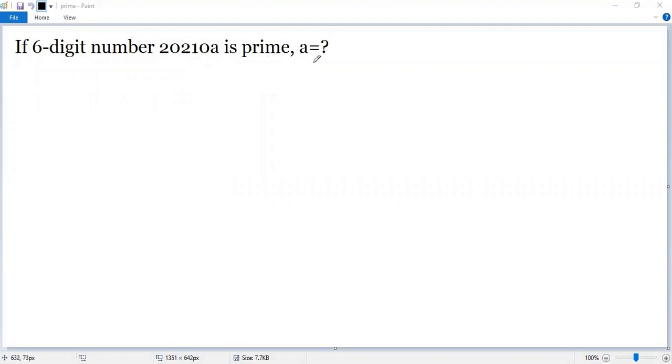To figure out this problem, let's pick up some basic facts. Given the K-digit number N equals A1, A2, up to AK, then 2 is not a factor of N if and only if the 1-digit AK is not even.